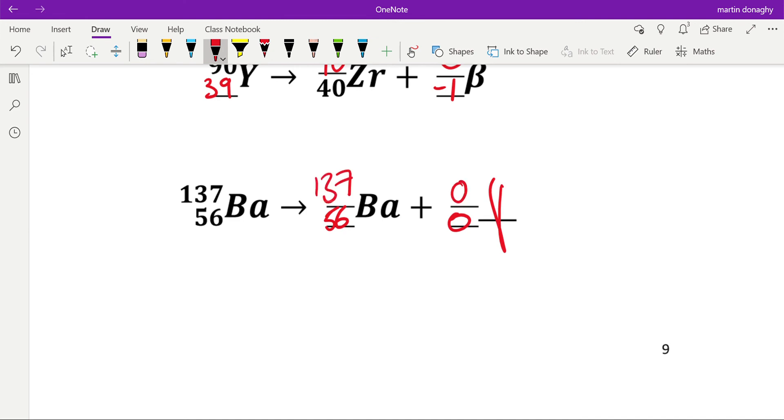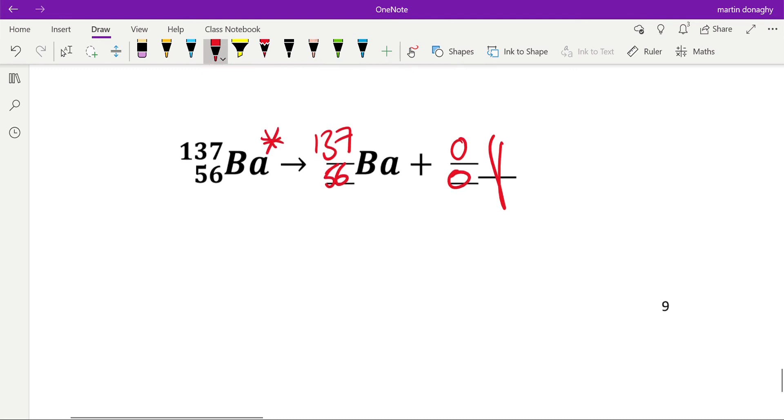Which means this up here is also zero, so this is 137. All that's happened is this has gone from a high-energy nucleus to a lower one.